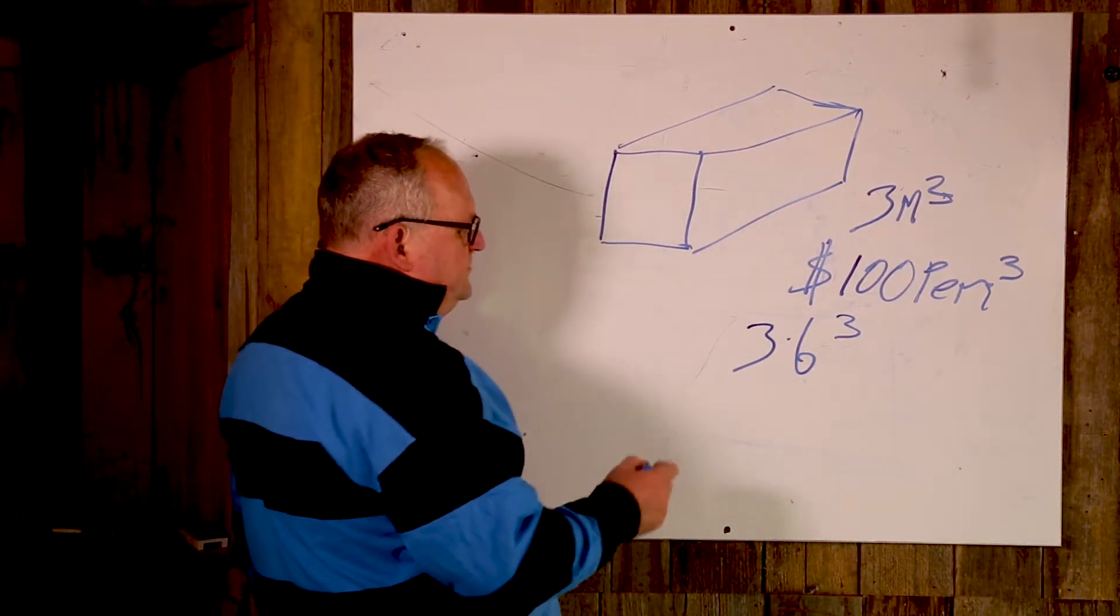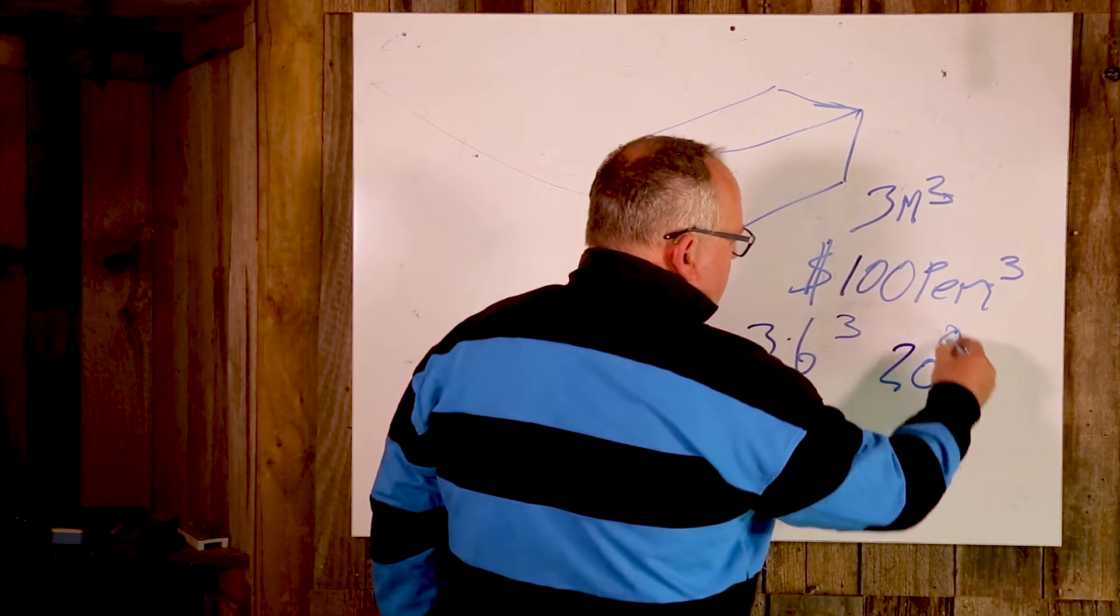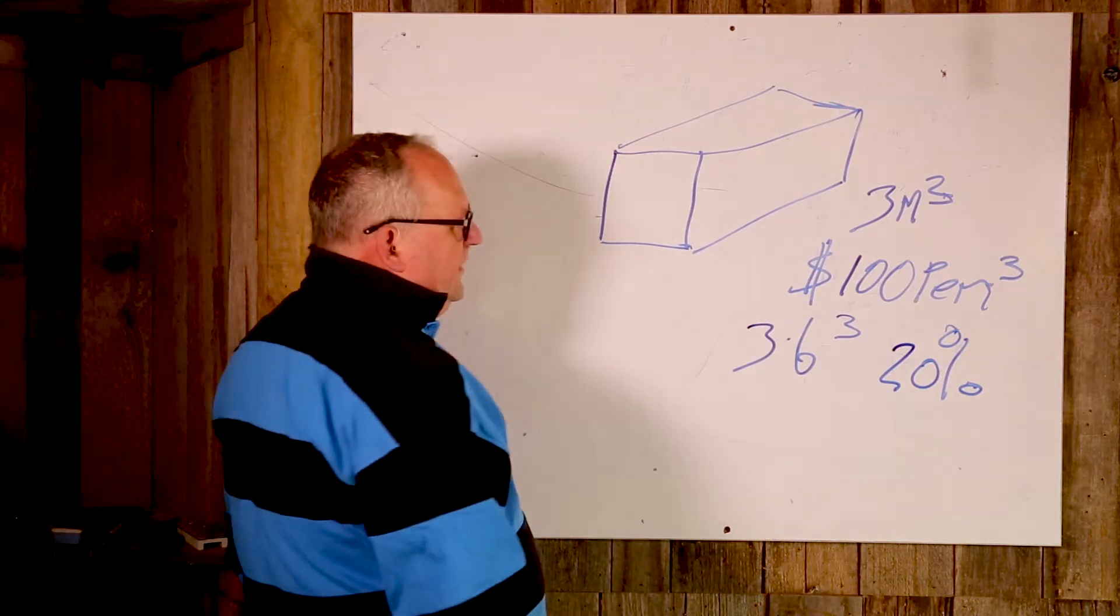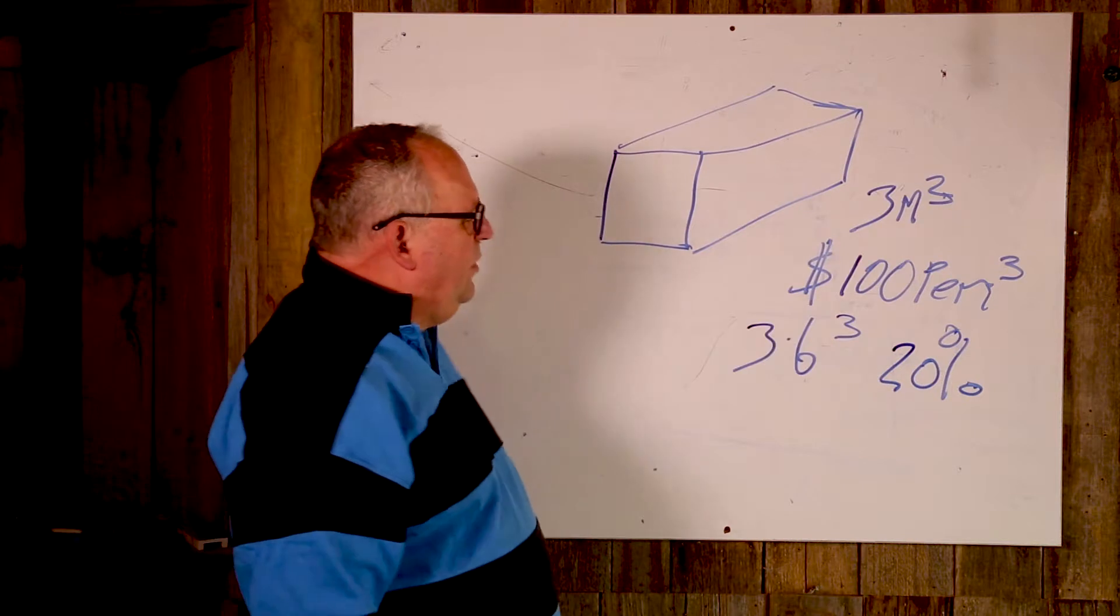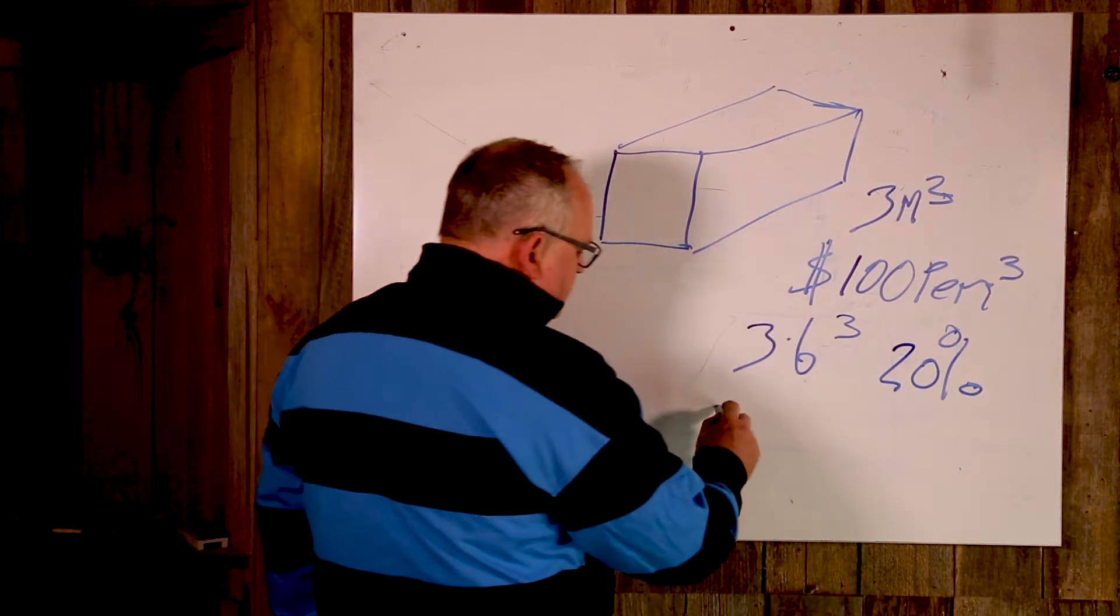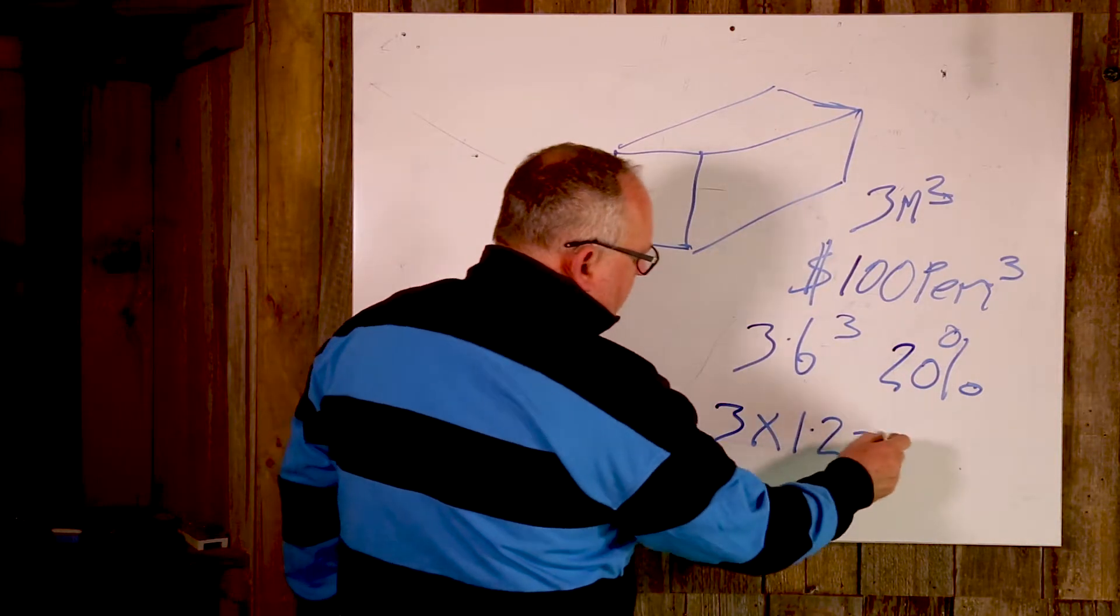So, if it's got a 20% bulking factor which clay does have, all I've got to do is multiply the 3 times 1.2 and equals 3.6.